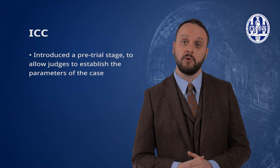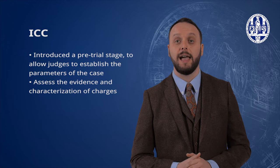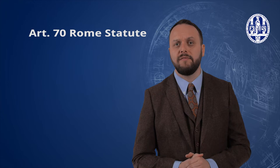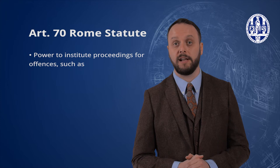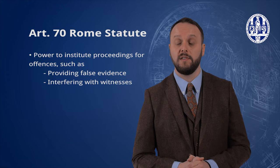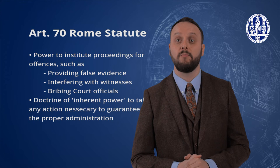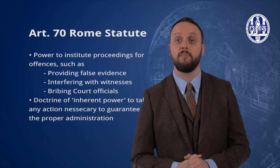Because international criminal proceedings are so procedurally and factually complex, they must be carefully managed. The ICC introduced a pre-trial stage to allow judges to establish the parameters of the case, assess the evidence and characterization of charges, and deal with any challenges to jurisdiction or admissibility. But how do the judges protect the administration of justice? Well, for example, Article 70 of the Rome Statute gives the judges the power to institute proceedings for offences against the administration of justice, such as providing false evidence, interfering with witnesses or bribing court officials. Judges can also use the doctrine of inherent powers to take any necessary action to guarantee the proper administration of justice.